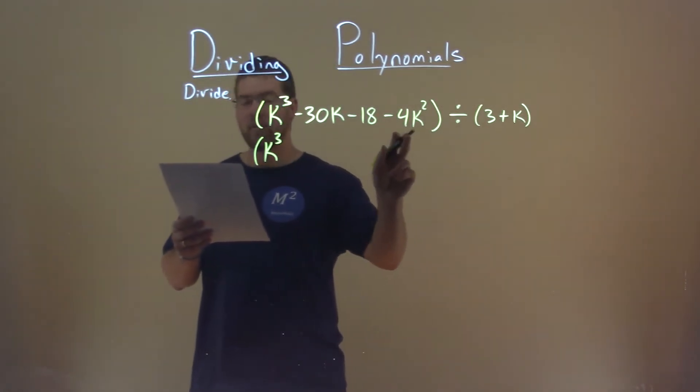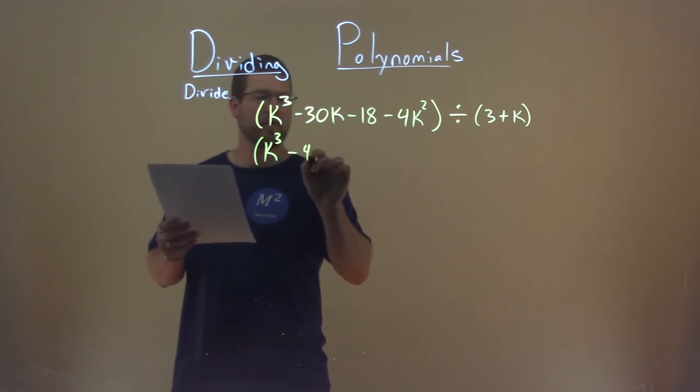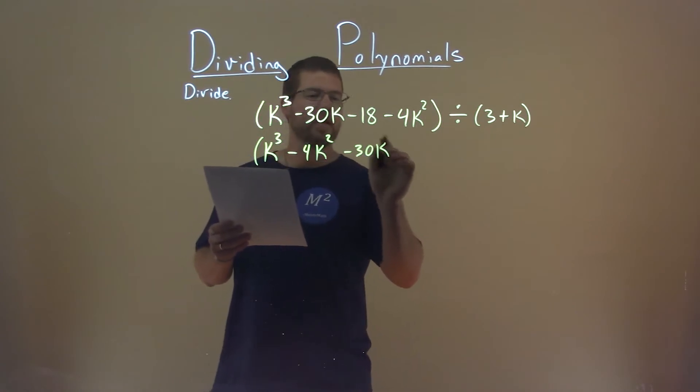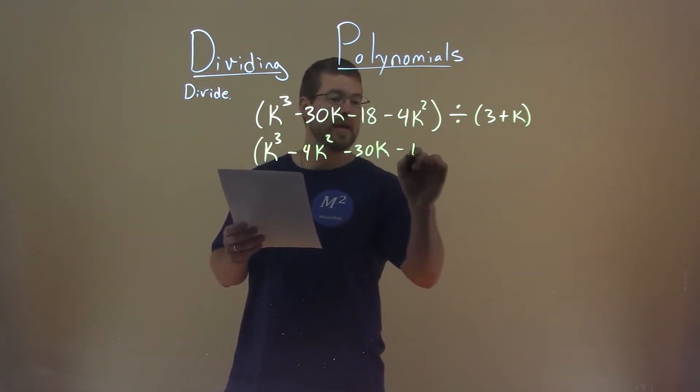But then we have a minus 4k squared, so I'm going to put that next, minus 4k squared. Then we have our minus 30k, then we have the minus 18.